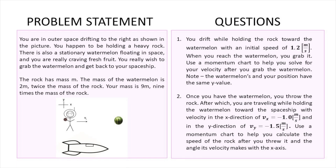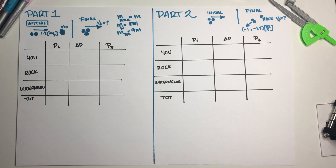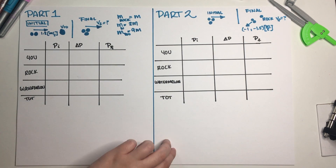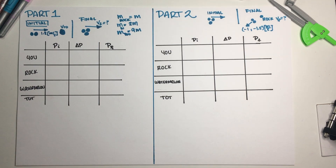The first part of the problem: you drift while holding the rock towards the watermelon with an initial speed of 1.2 meters per second. When you reach the watermelon, you grab it. Use a momentum chart to solve for your velocity after you grab the watermelon. Note: the watermelon and your position have the same y value. I have everything written in my notes, divided into part one and part two — let's do part one first.